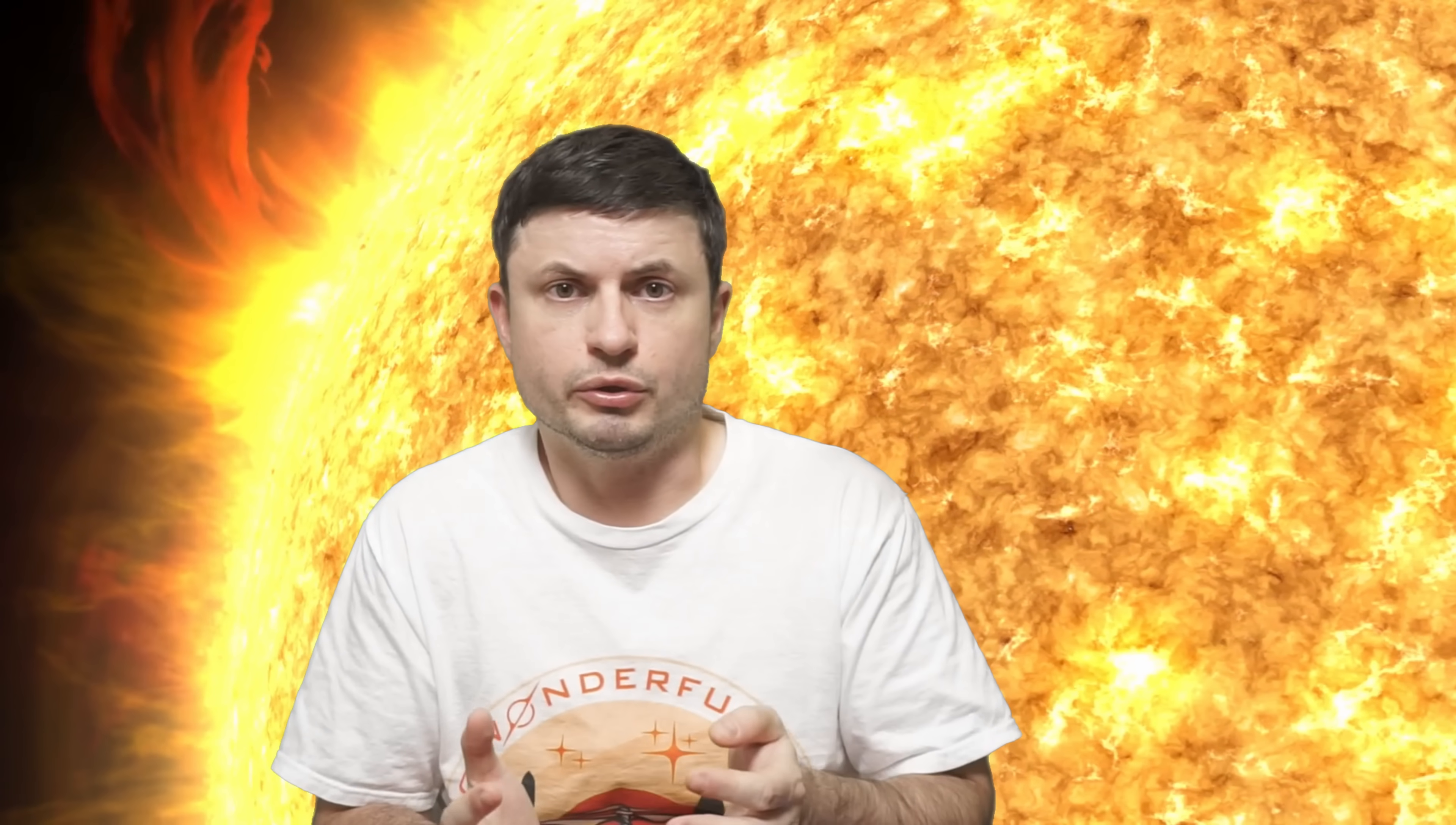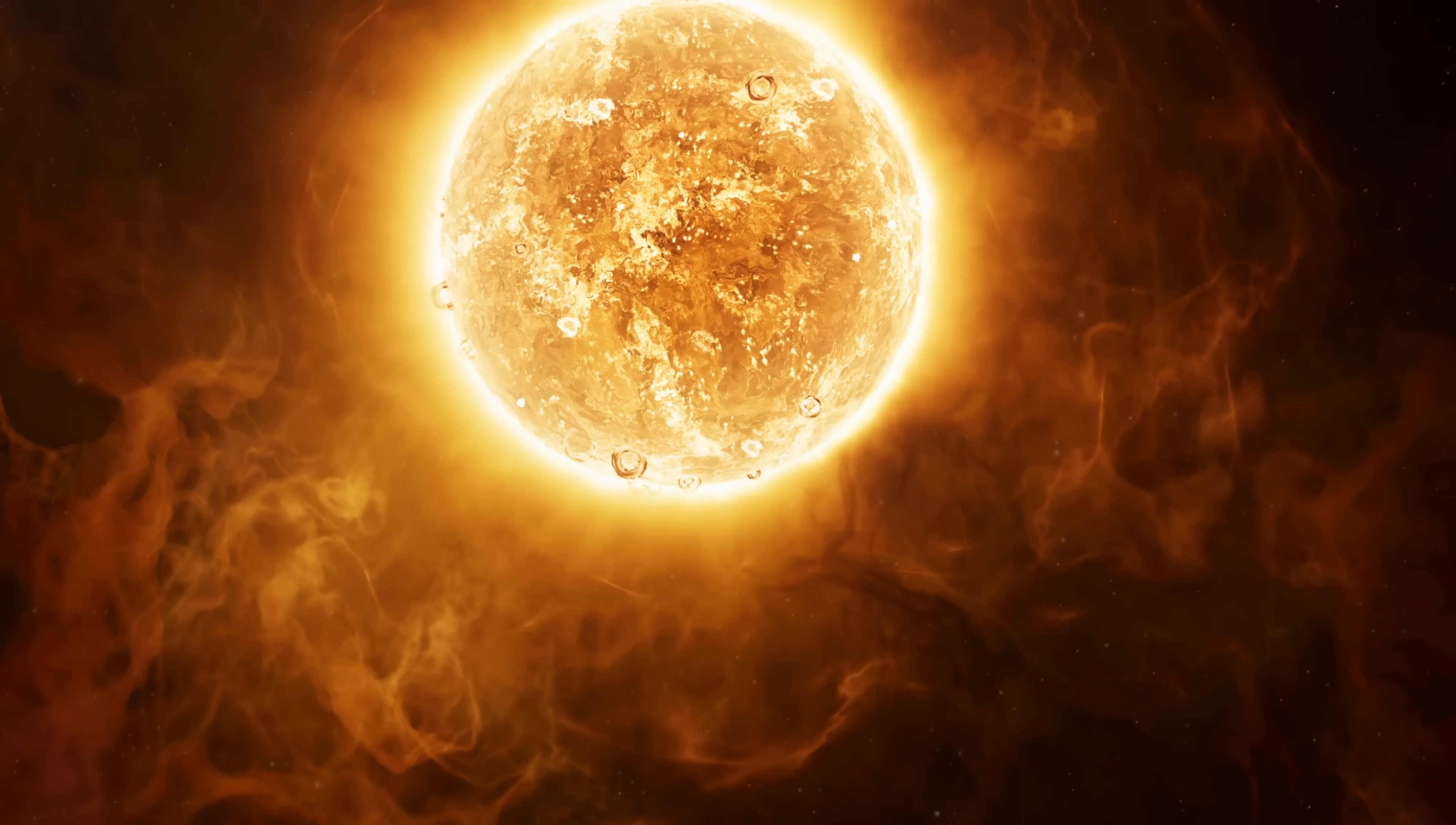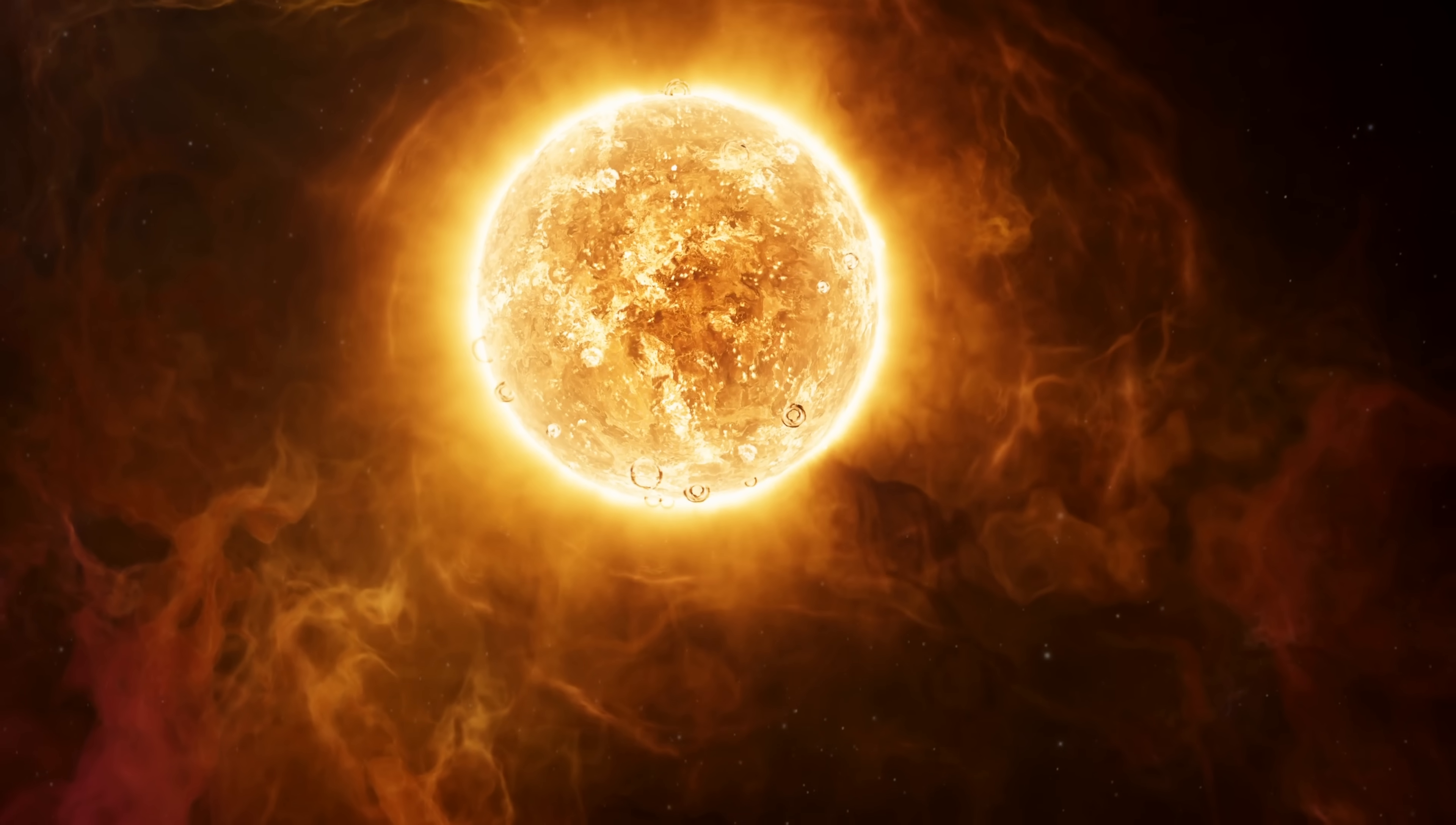Alpha Centauri is a system of a red dwarf, a K-type star, and a G-type star. And we know that the G-type star does not seem to contain any planets around it.